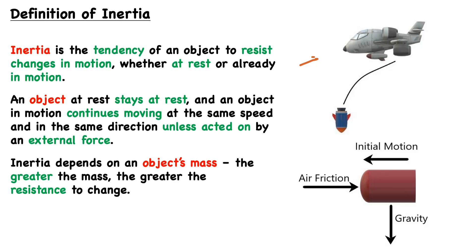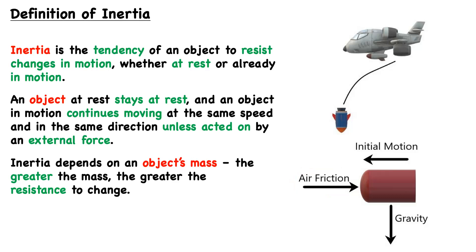We can take a look at one example: an airplane carrying and dropping a payload. Initially the airplane is traveling forward at some velocity, at which point it drops the payload. But the payload has inertia — it will want to continue moving at the same speed and in the same manner as the airplane. However, this motion will be opposed by air friction, opposing the horizontal motion. This is exactly what we mean by 'unless acted upon by an outside force.' Without air friction, inertia would see that payload continue to move in the same manner.